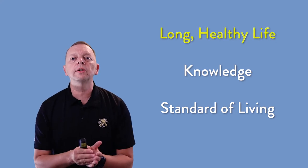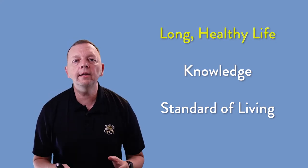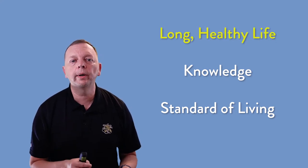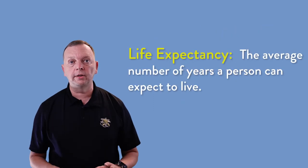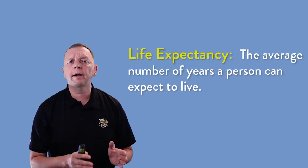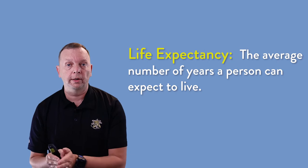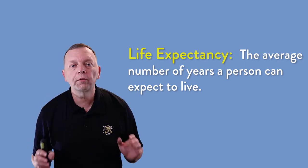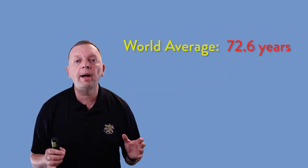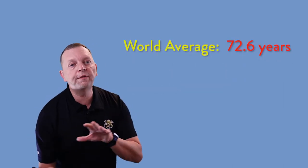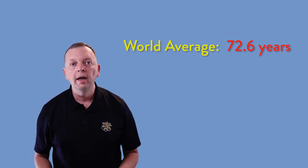The first of the three indicators is long and healthy life, and the key demographic the UN looks at is life expectancy — the average period that a person in that country is expected to live. Overall, the world life expectancy is about 72 years old, but this varies greatly from country to country.